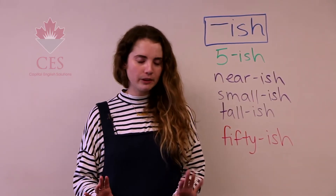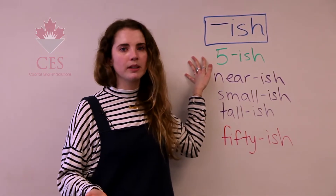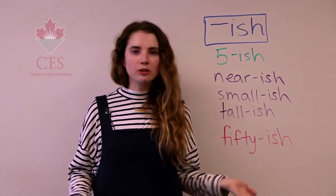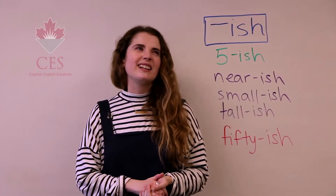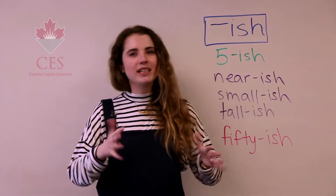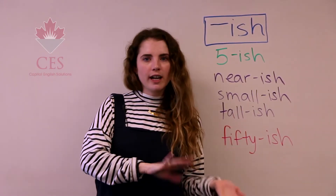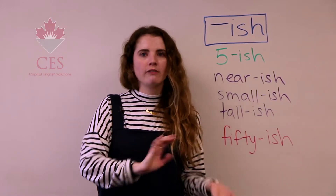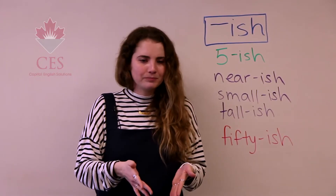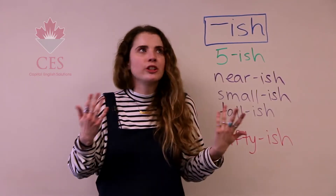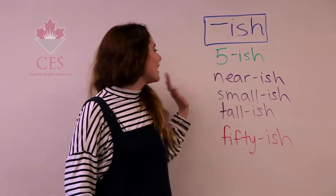We can use '-ish' to talk about a time. Imagine you're making plans to meet a friend and you decide to meet at five-ish. That could be before five, just before five, or just after five — it's not an exact time. You could also plan to meet for dinner at seven-ish.